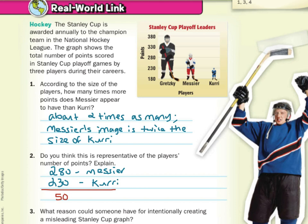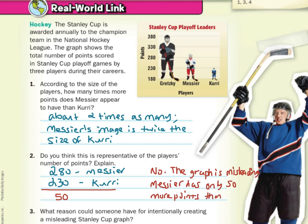If we look at the total difference here, the total difference is only 50. So basically our answer here is no. The graph is misleading. Messier has only 50 more points than Curry.